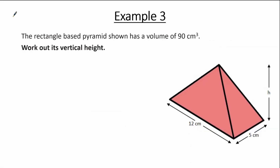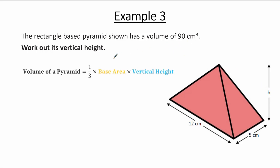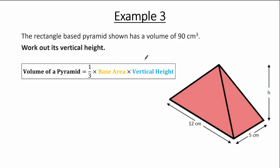Let's take a look at example 3. We are given: the rectangle-base pyramid shown has a volume of 90 cm cubed — work out its vertical height. The base is a rectangle with dimensions 5 cm and 12 cm, and the vertical height h is unknown. Since we are given the volume, we can use the volume formula to find h. The volume of a pyramid equals one-third multiplied by the base area multiplied by the vertical height, where the base area is 12 multiplied by 5, and the volume is 90 cm cubed.